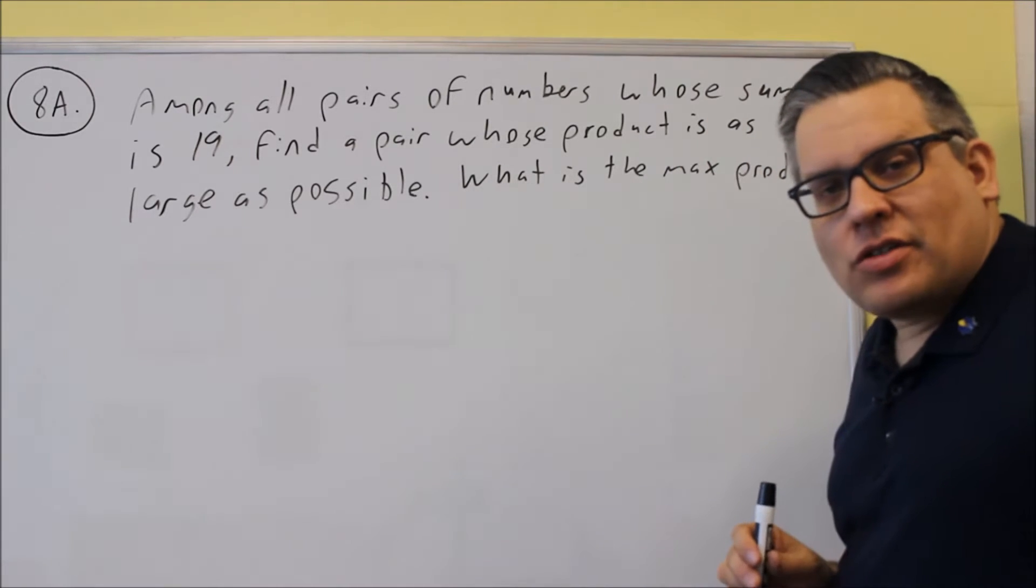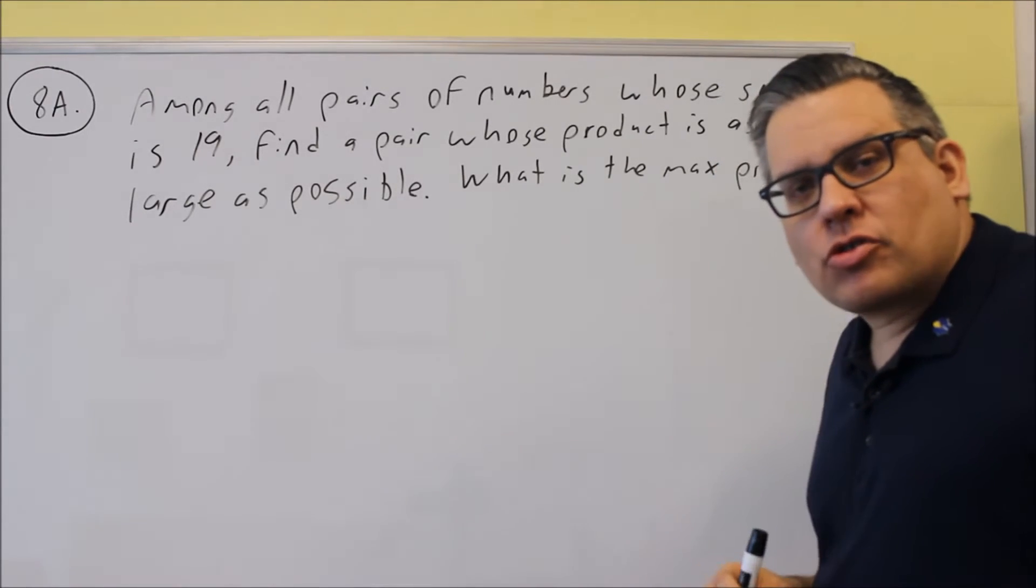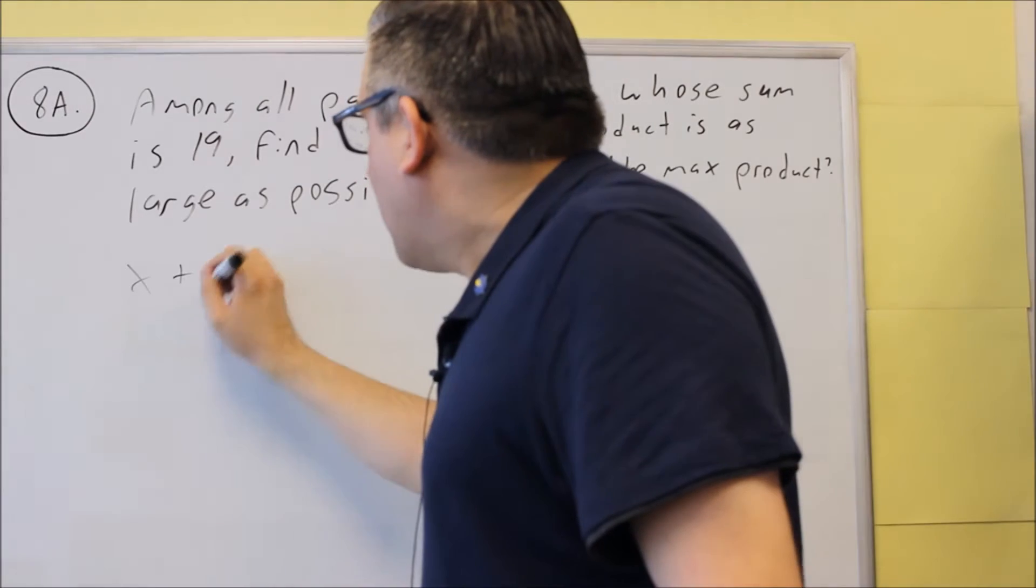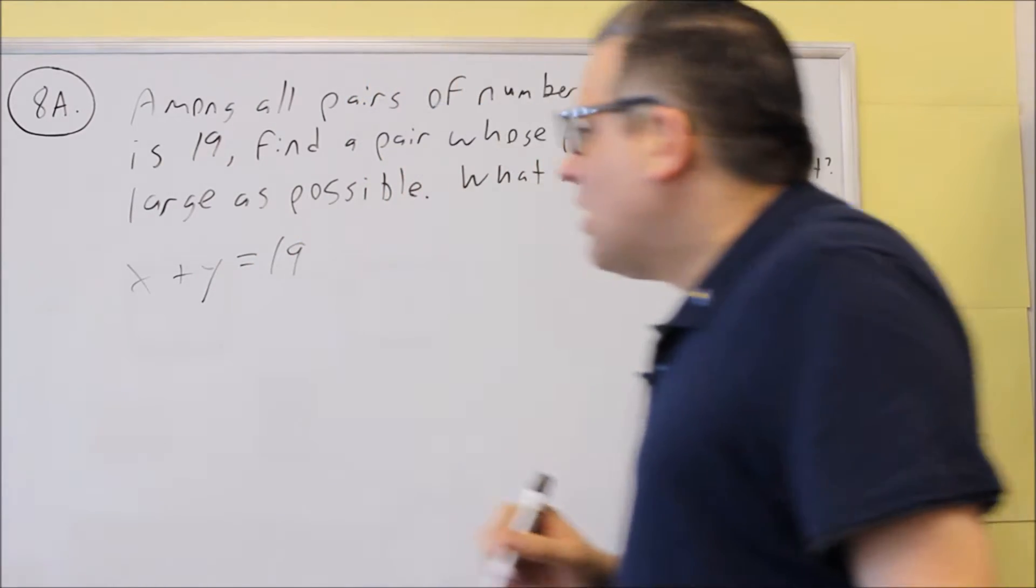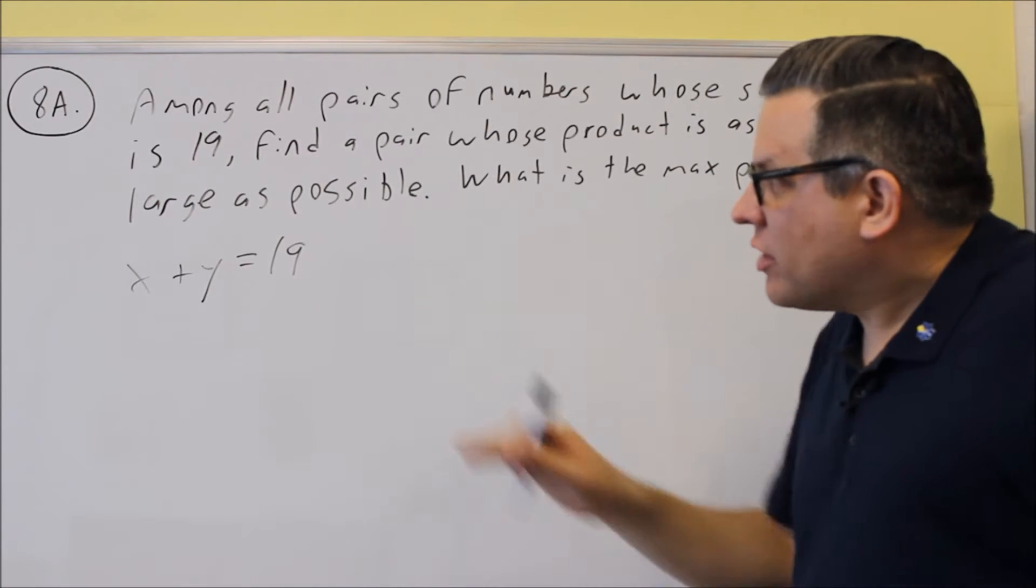It says whose sum is 19. Okay, so we want to write an algebraic expression for two numbers whose sum is 19. That would look like this. We're going to do x plus y equals 19. Those are my two numbers, I'm adding them together, equals 19.